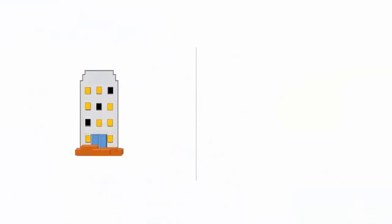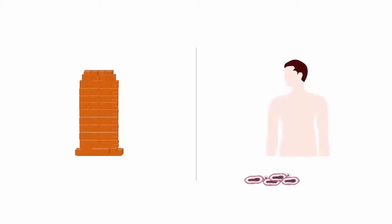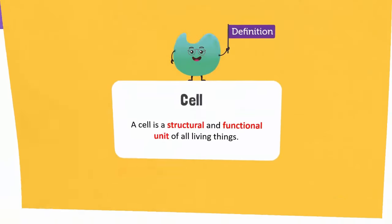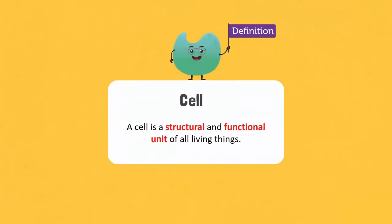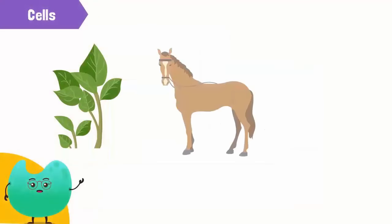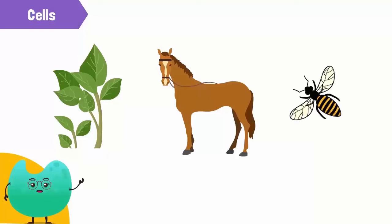all organisms are made up of very tiny building blocks called cells. The cell is a structural and functional unit of all living things. Every living thing is made up of cells.